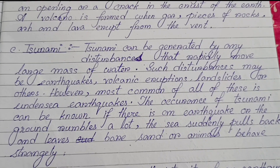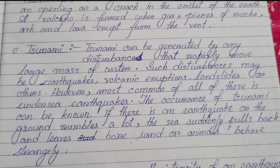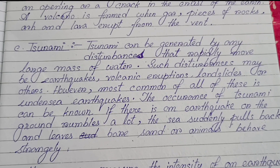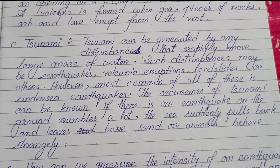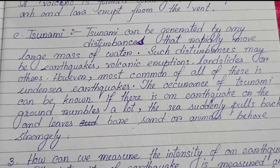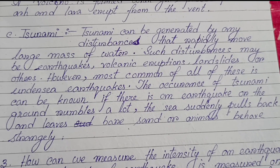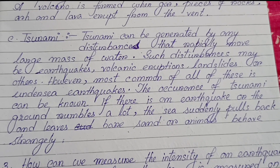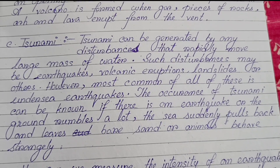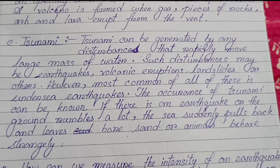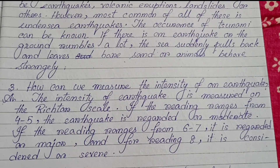(c) Tsunami: Tsunami can be generated by any disturbance that rapidly moves a large mass of water. Such disturbances may be earthquakes, volcanic eruptions, landslides or others; however, the most common cause is undersea earthquakes. The occurrence of a tsunami can be known if there is an earthquake, the ground rises or falls a lot, the sea suddenly pulls back and leaves bare sand, or animals behave strangely.